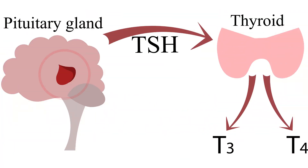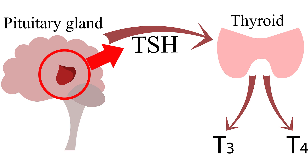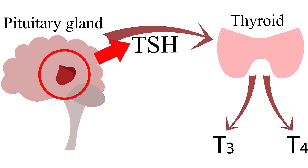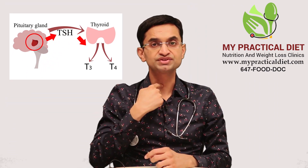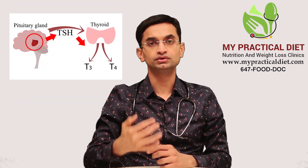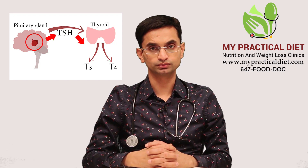The second organ is the pituitary gland, which is a tiny gland located in our brain. It makes a hormone called thyroid stimulating hormone, or TSH, which circulates in the blood and stimulates the thyroid gland to make thyroid hormone.